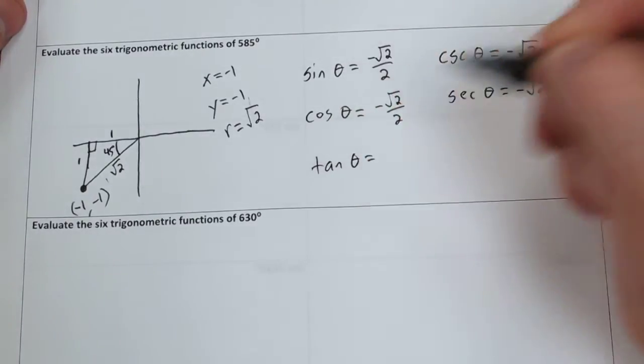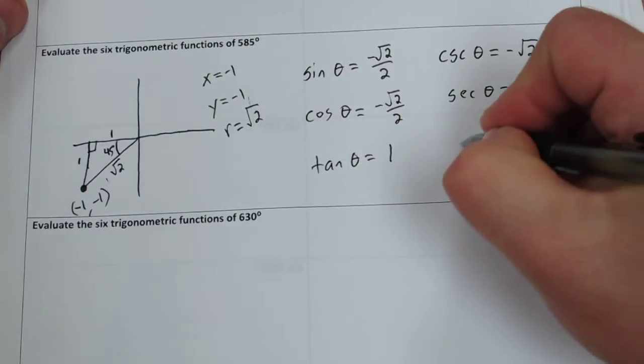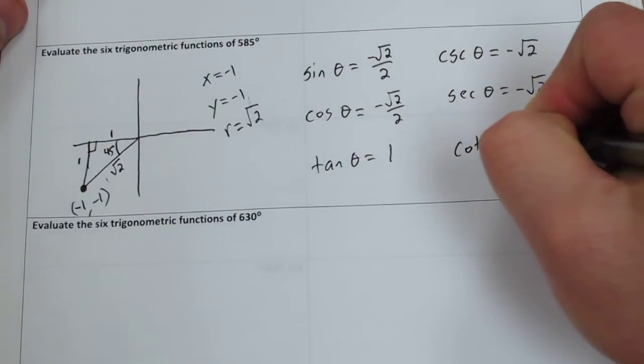Tangent is y over x, which is negative 1 over negative 1, it's 1. And cotangent is also 1.